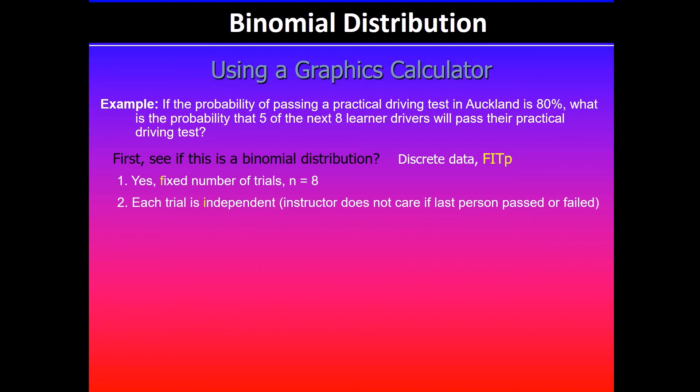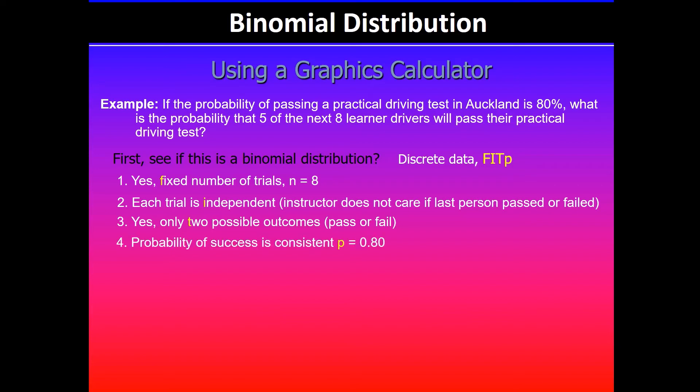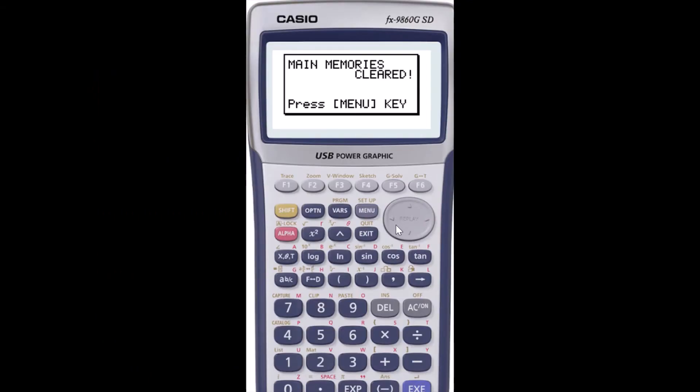Each trial is independent — the instructor will not care if the previous candidate has passed or failed the driving test. There are two possible outcomes: the learner driver will either pass the practical driving test or fail. And the probability of success is consistent — in this case, the probability is 0.8, which is 80%.